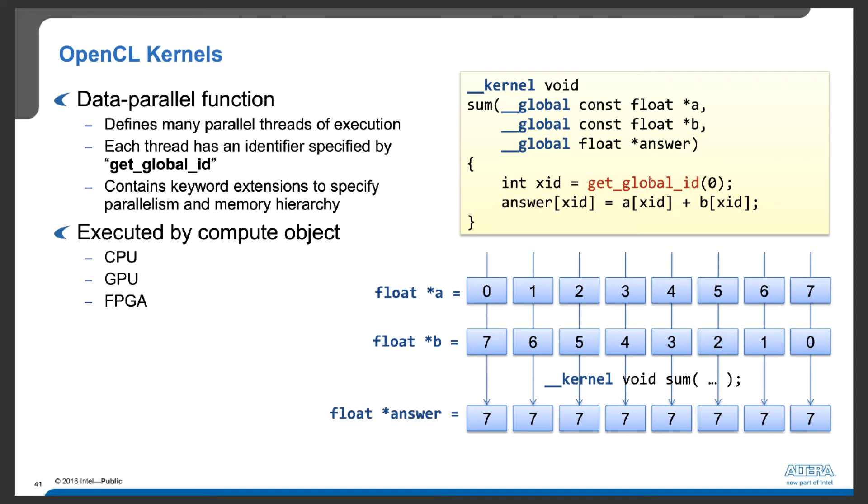Each of these threads or instances of the kernel execution will rely on identifiers specified by get_global_id, or sometimes get_local_id. These IDs help us identify the segments or partitions of data that this particular kernel is supposed to work on.